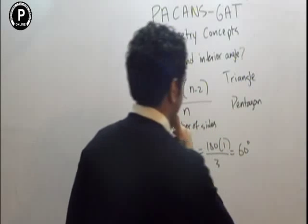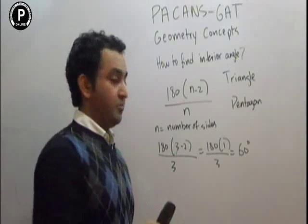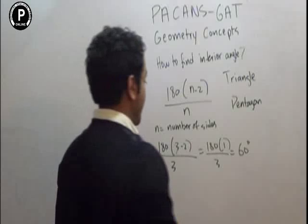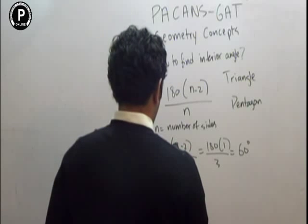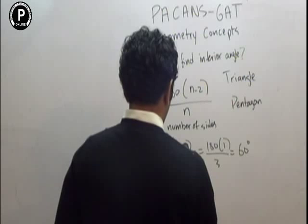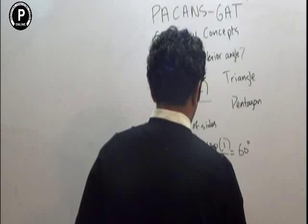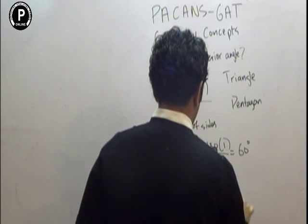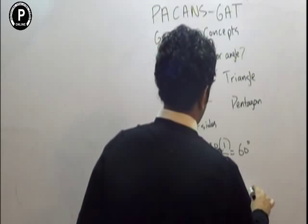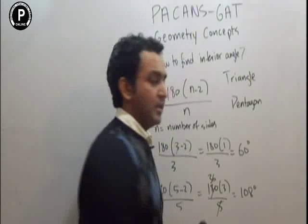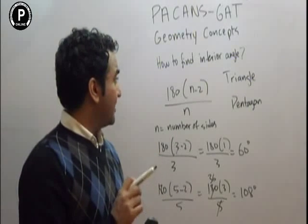So each interior angle of a triangle would be 60 degrees. For a pentagon, that would be 180 times (5 minus 2) over 5, which is 180 times 3 over 5. Simplifying — 180 divided by 5 is 36, times 3 gives 108. So each interior angle of a pentagon is 108 degrees.